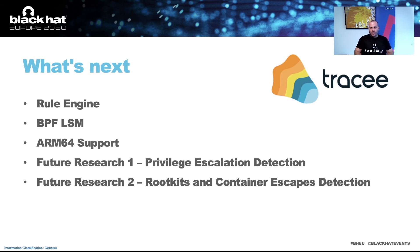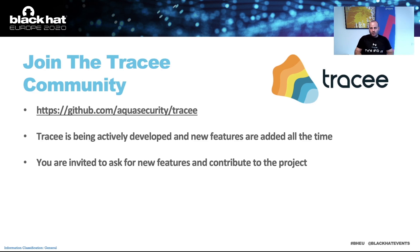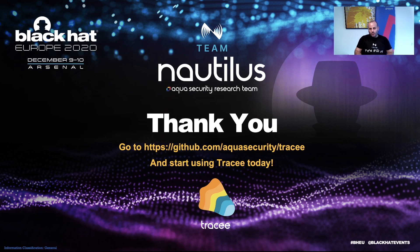What's next on our roadmap? We want to implement a rule engine using behavioral signatures on events from Tracy to detect malicious behavior — this is already a work in progress available in the Tracy repo. On recent kernels, it is now possible to enforce policies using LSM hooks with BPF, and we would like to try this with Tracy. We also want to add support for ARM64 architecture. As future research, we want to use eBPF to detect privilege escalation, rootkits, and container escapes. Tracy is being actively developed — you are invited to ask for new features and contribute to the project. Thank you.